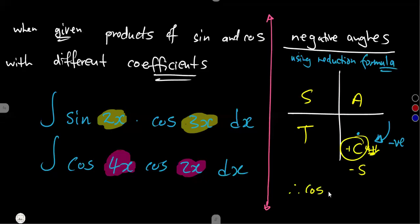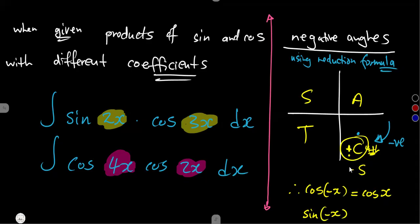Therefore, cosine of any negative angle — whether it is negative x or negative theta — because it lies in the fourth quadrant where cosine is positive, it will change to a positive cosine. If it is a negative sine of x, in the fourth quadrant sine is negative, so it will carry a negative sign.